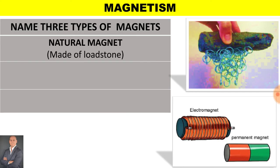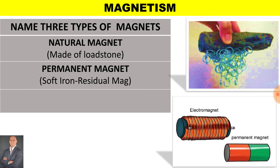We get a natural magnet made from loadstone, a permanent magnet made from soft iron, and an electromagnet made from coils and an iron core.